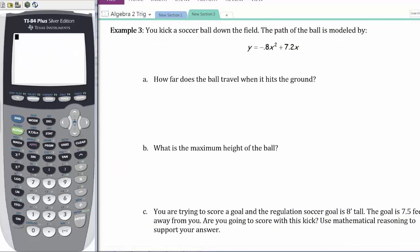Example 3: You're kicking a soccer ball down the field. The path of the ball is modeled by y = -0.8x² + 7.2x. I want to know how far does the ball travel when it hits the ground. I need to graph it. I'm going to go to Y=, type it in: -0.8x² + 7.2x. If I look at my graph, I cannot see the entire path of the ball. Part of the top is missing, so I need my graph to be taller. I need to change the window. I'm going to go to Y MAX and change it to 20. Then I hit GRAPH, and now I can see it.